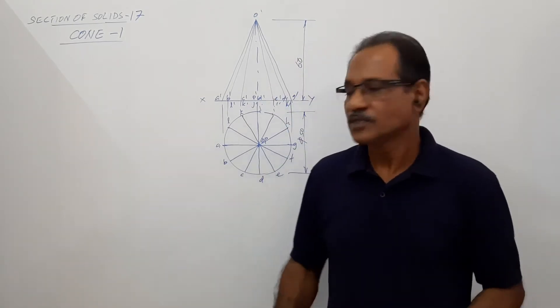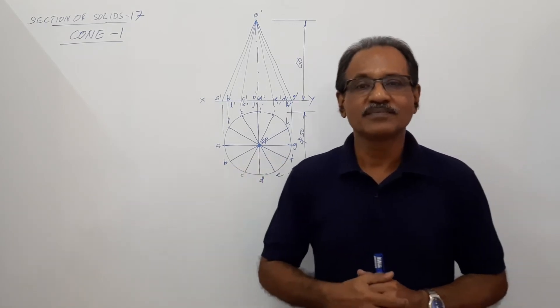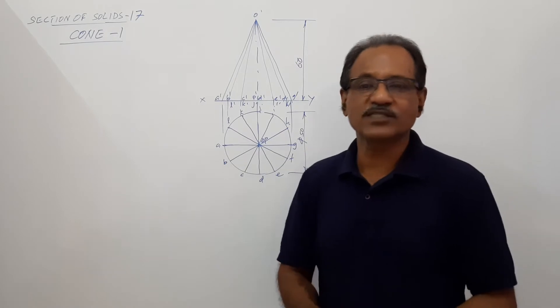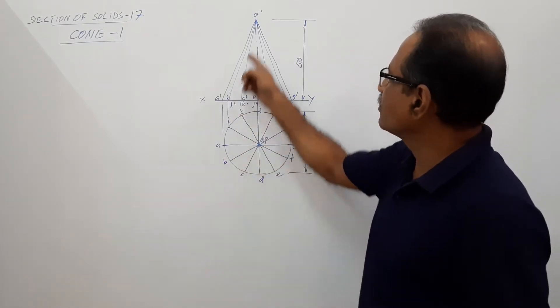A cone 50mm diameter, 60mm axis side, stands on HP on its base. Plan is a circle, elevation is projected from the plan.